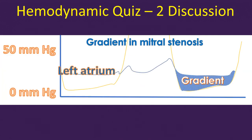Earlier it used to be calculated using a manual planimeter on a printout of the tracings on graph paper. The tracings were enlarged by changing the scale of recording so that errors could be reduced.